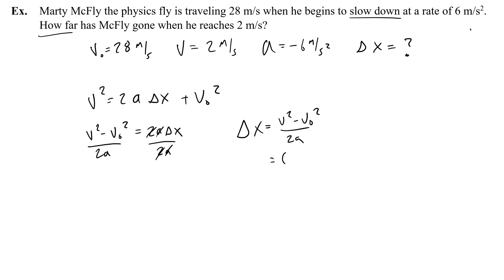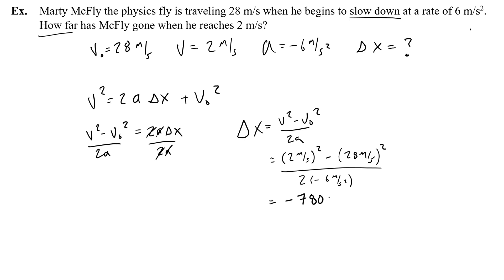Plugging in: 2 meters per second squared minus 28 meters per second squared, divided by 2 times negative 6. That's 4 minus 784 on top, which is negative 780 meters squared per second squared, divided by negative 12 meters per second squared. Negative 780 over negative 12 gives positive 65. The units work out to meters, so McFly traveled 65 meters. We figured out how far he went without finding the time.